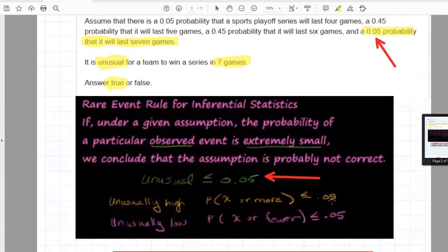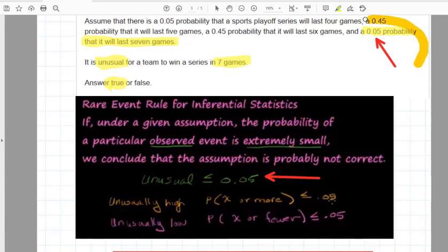then that is what is known as a rare event, or an unusual event. And here the event of 7 games is exactly 0.05, which is 5%, 5% or less,